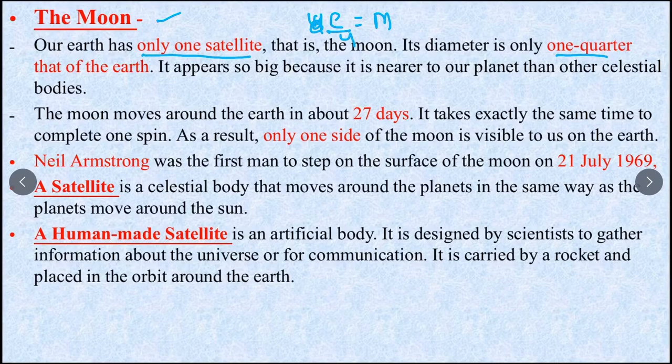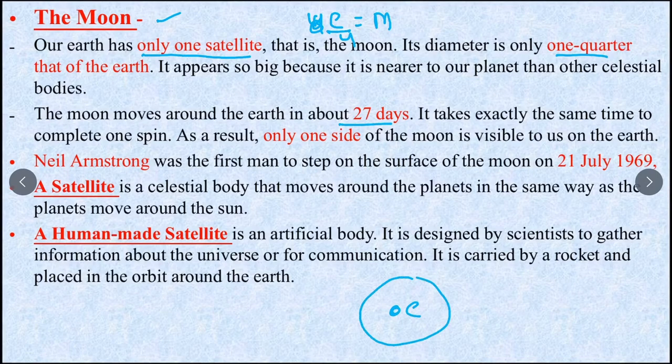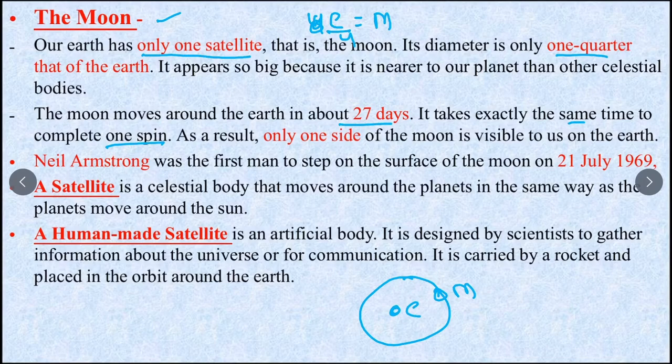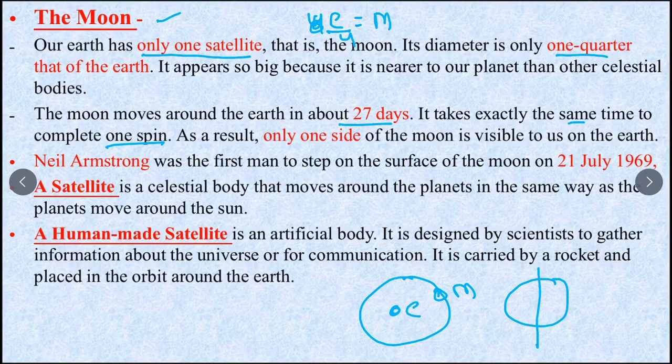The moon moves around the earth in about 27 days. If it is earth, the moon takes 27 days to revolve around the earth. And it takes the same time to rotate on its axis. What does it mean?